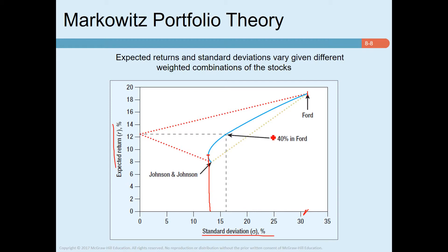On the efficient frontier, the upper area corresponds to high risk with high return, while the lower area corresponds to low risk and low return. Where an individual investor chooses to invest depends on their risk appetite. A high-risk-tolerant investor will invest in the upper area, while a very risk-averse investor will invest in the lower area. That is the efficient frontier and its relationship between risk and return. In the next video we will discuss the efficient frontier further.